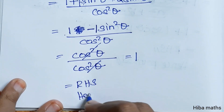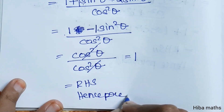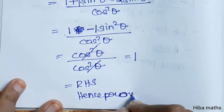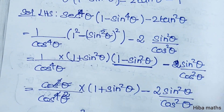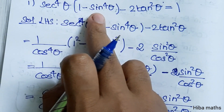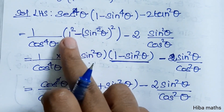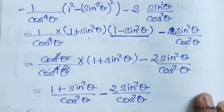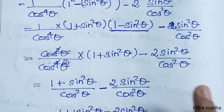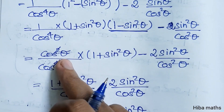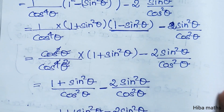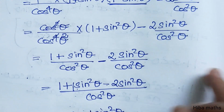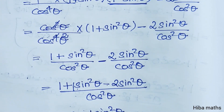We used 2 identities to solve this. First identity: 1 minus sin²θ equals cos²θ, and the second identity relates to the cos square terms. Now we will do the second subdivision.